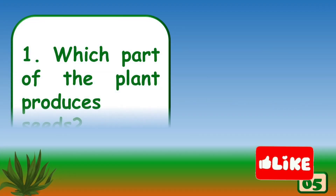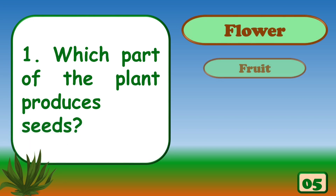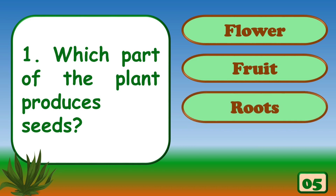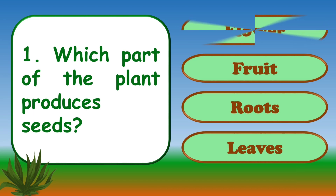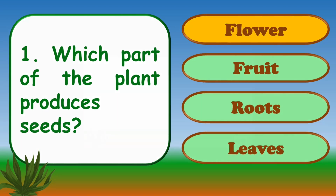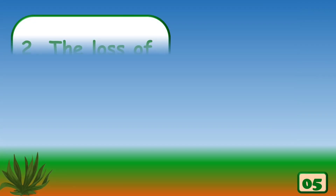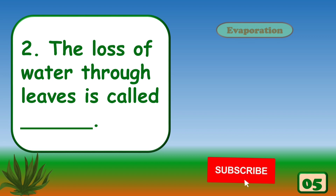Which part of the plant produces seeds? The right answer is flower. The loss of water through leaves is called?